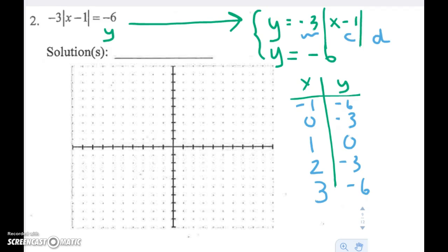I'll start with my vertex at 1, 0. And then my points on both sides start to decrease. So 2, negative 3, 3, negative 6. And on the other side, same thing is going to happen. 0, negative 3, negative 1, negative 6.